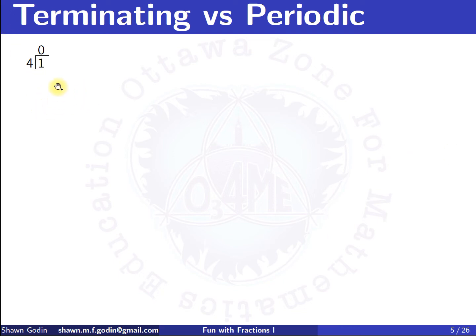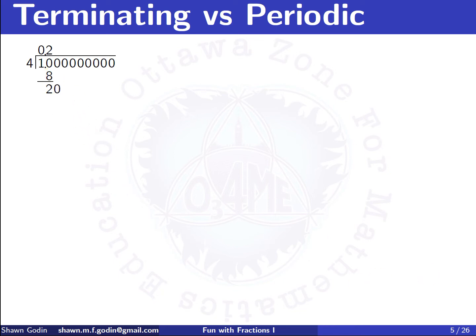Keep in mind that one is the same as 1.000 — I can throw in as many zeros as I want. Now we take down the next digit and look at four going into 10. Yes, it goes in twice. Four times two is eight, and we subtract to get a remainder of two. We bring down a zero: does four go into 20? Yes — four times five is exactly 20, so we have a remainder of zero, which means we're done. So one quarter is 0.25.